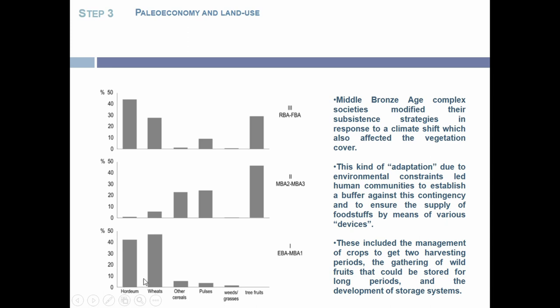We have the classical barley and wheat consumption during the early Bronze Age, connected to the typical Mediterranean area — the same type as from the Neolithic. During the Middle Bronze Age, we have an augmentation of pulses, other cereals, and the use of tree fruits, connected to the use of a new environment: the sub-coastal environment. This trend is marked in the third phase, when the use of tree fruits becomes a strategy to adapt to the environment and to change the catchment area in different organizations of the territory.